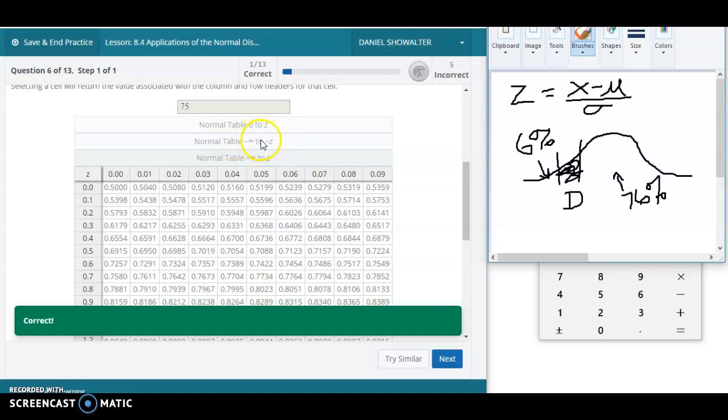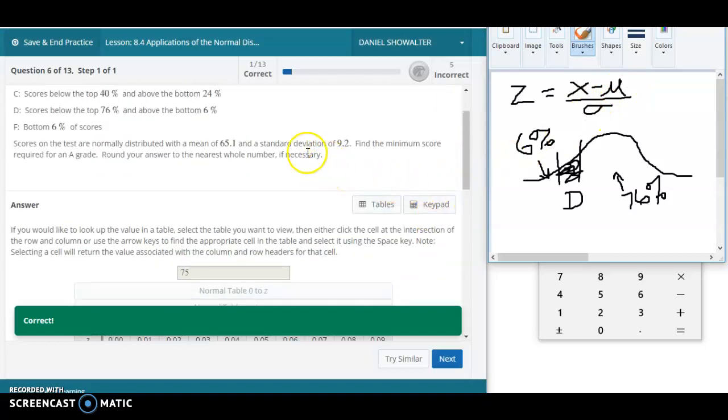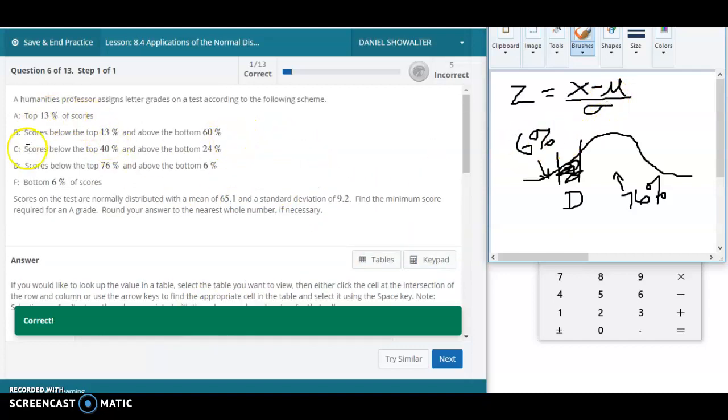Again, it would be the negative infinity to negative Z table. That would give us a Z-score. We would plug that Z-score in here. The mean and the standard deviation would be the same, 65.1 and 9.2. And those were the same in the previous problem I worked through also. It would be the same for this entire grading range. The only thing different there would be the Z.